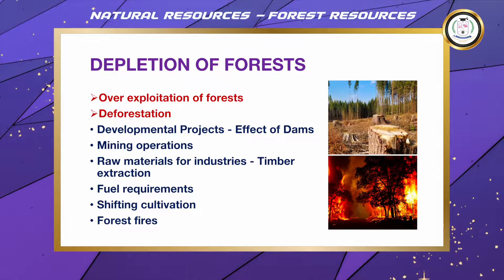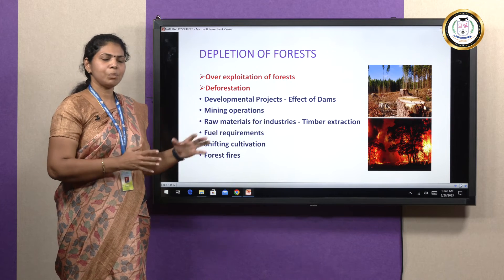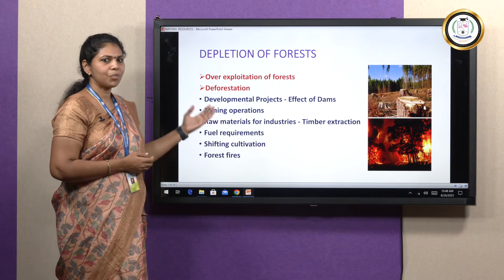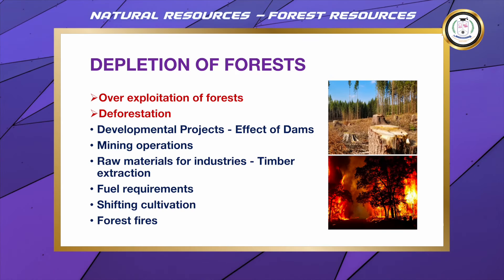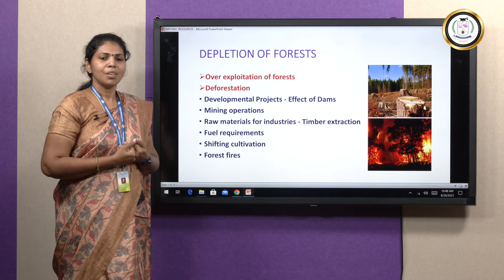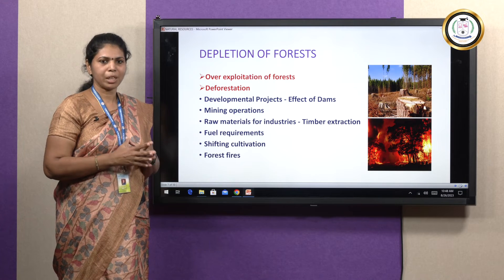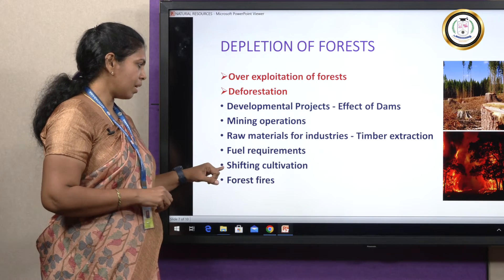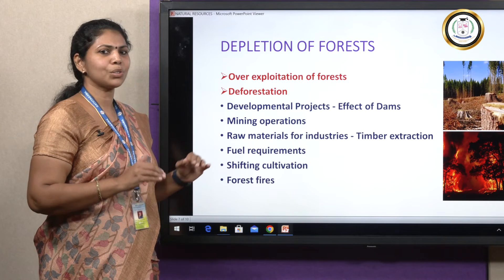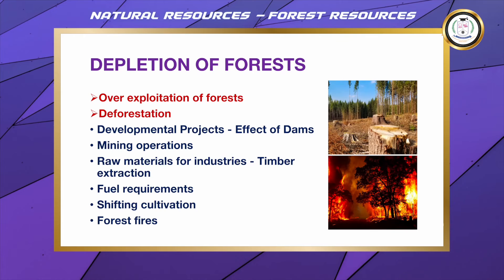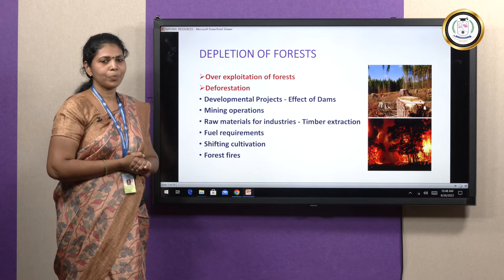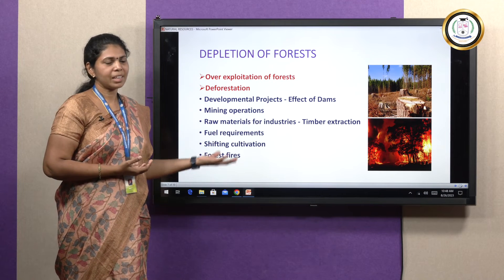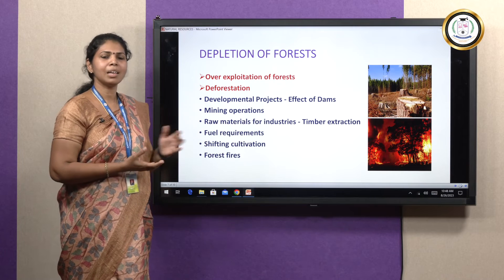Fuel requirements — though we have a number of choices, we depend on wood as a major fuel, and due to increase in population, the fuel requirement is also increasing. Shifting cultivation — though we have a variety of forests, we prefer certain species of crops to be planted, so we destroy forests and start shifting cultivation, removing the natural forest resource. Forest fires — these can be natural or sometimes man-made. People who move into the forest for recreation sometimes set forest fires by accident, and it also happens due to global warming and natural calamities.